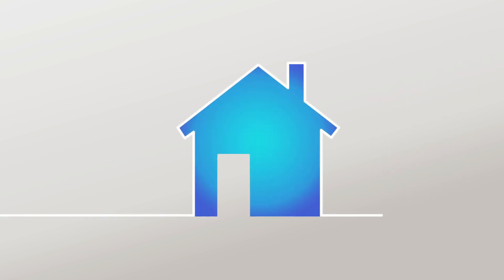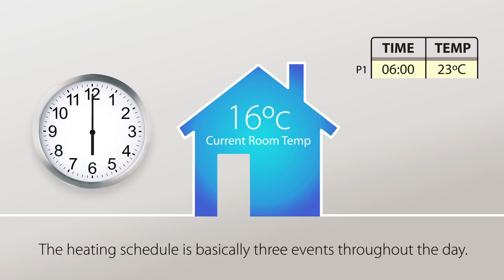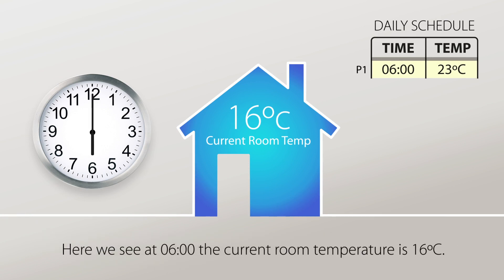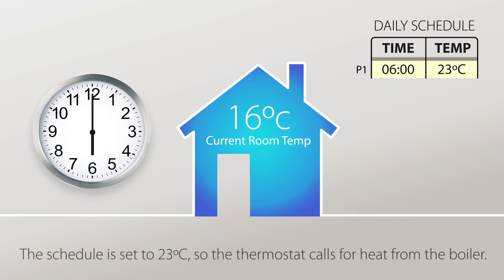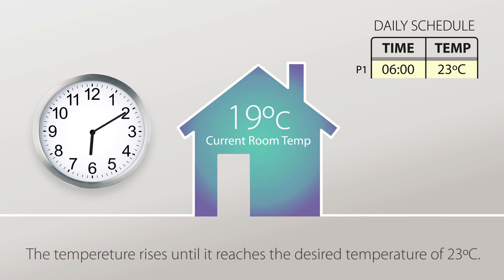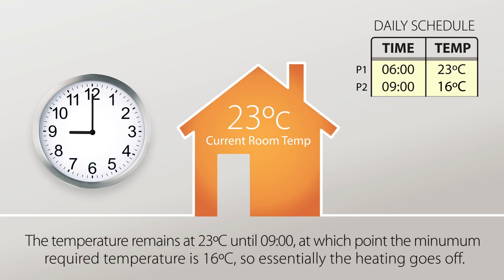At 6 a.m. the current room temperature is 16 degrees. Programme 1 is the first on time and temperature. The temperature is set to 23 degrees, so the thermostat calls for heat from the boiler. The temperature rises until it reaches 23 degrees. Programme 2 is the off time and temperature. At 9 a.m. the minimum temperature required is 16 degrees, so essentially the heating goes off.